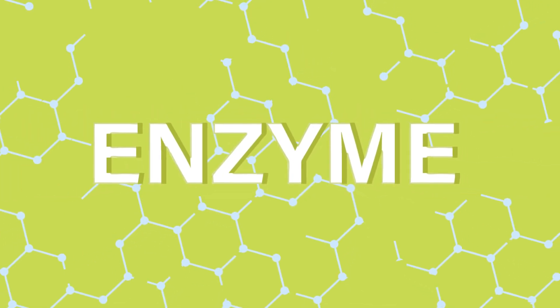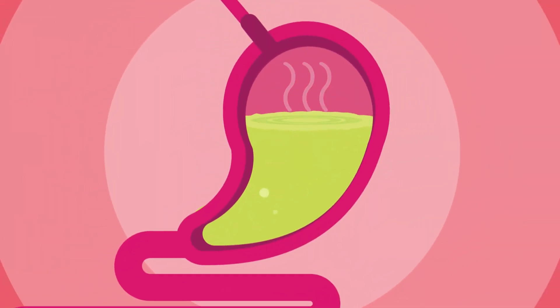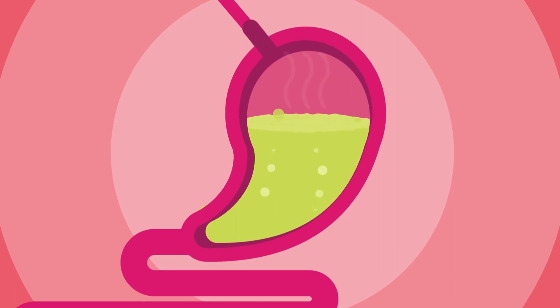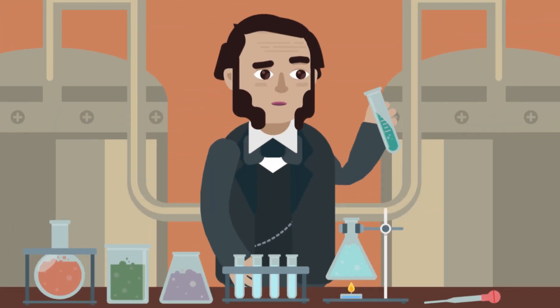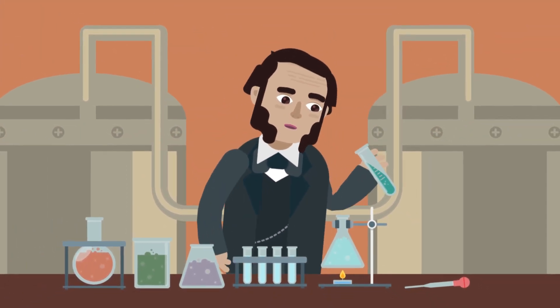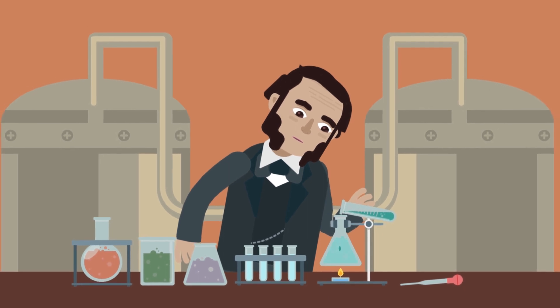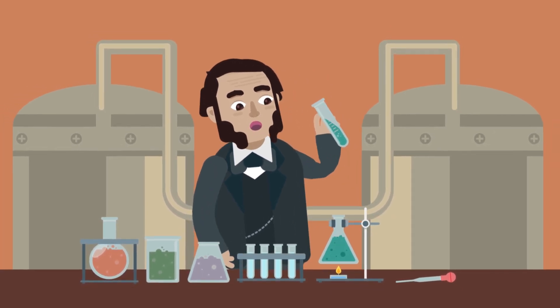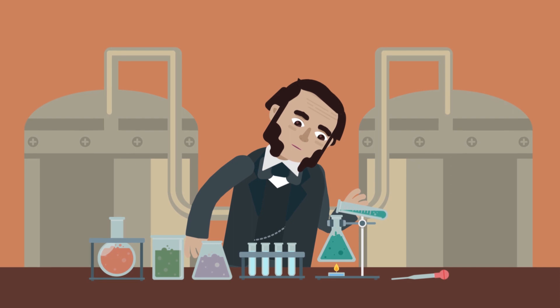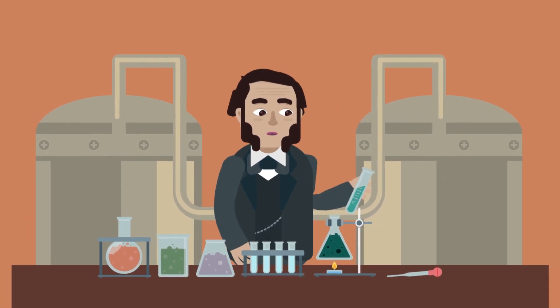Enzymes. The human body is a product of different chemical reactions and processes. But what controls these reactions? In 1833, a French chemist, Anselm Payen, was the first to discover the vital force that drove these reactions and named it enzyme.